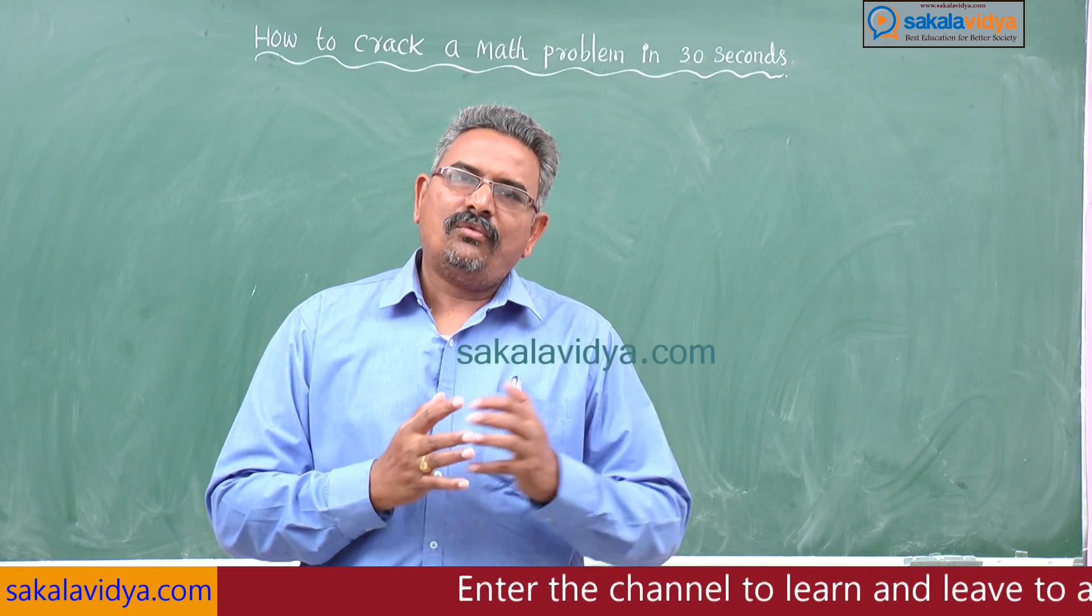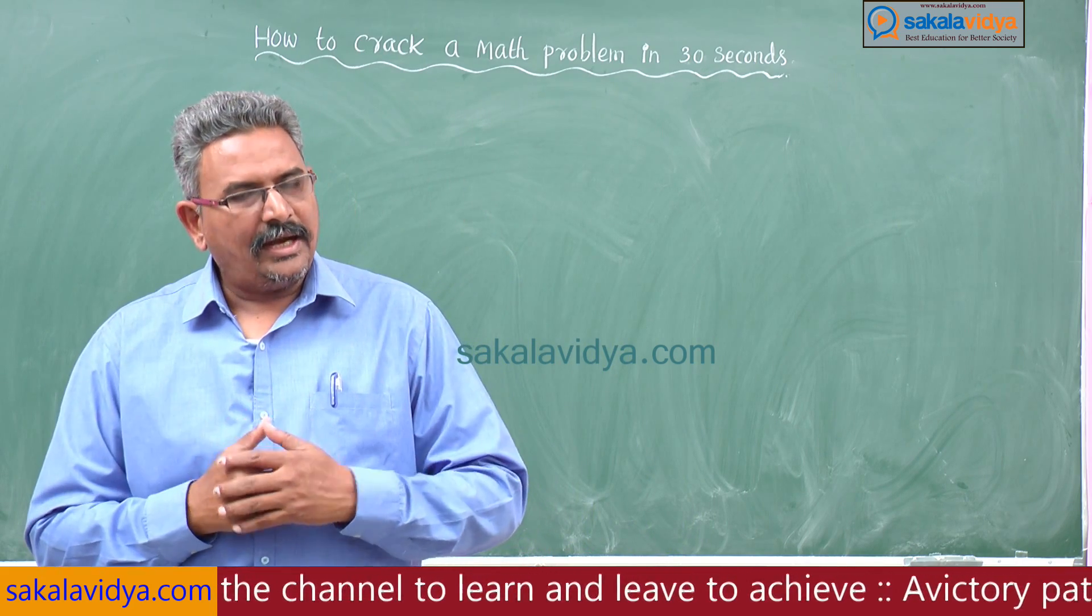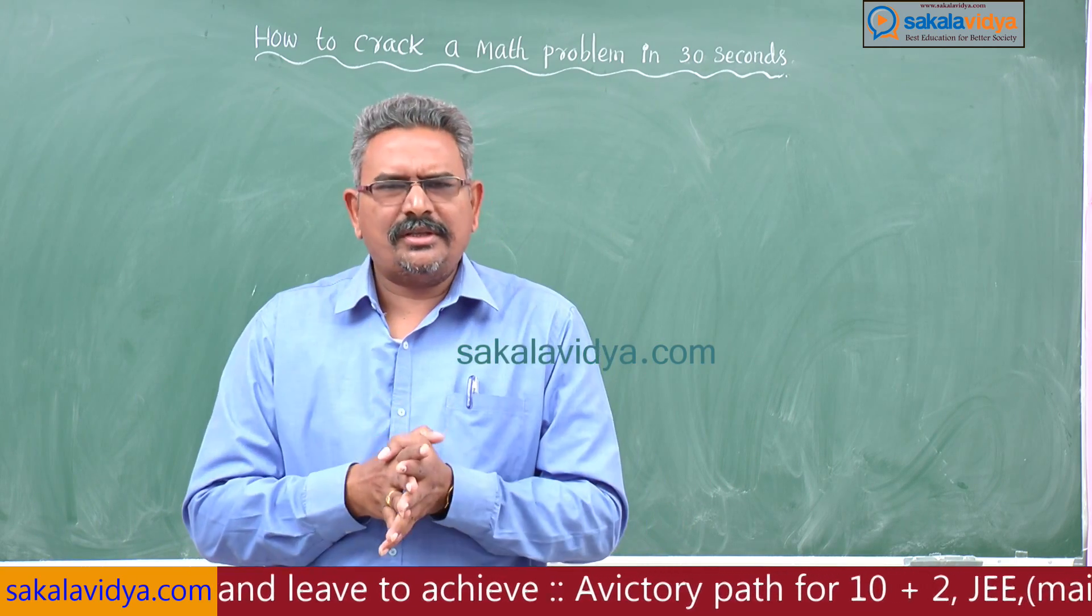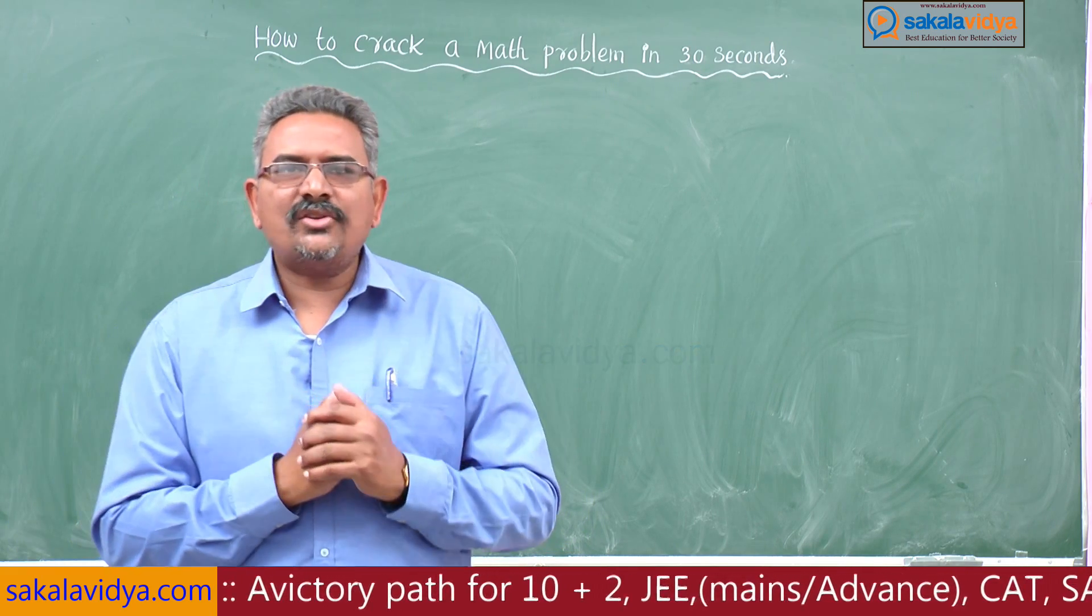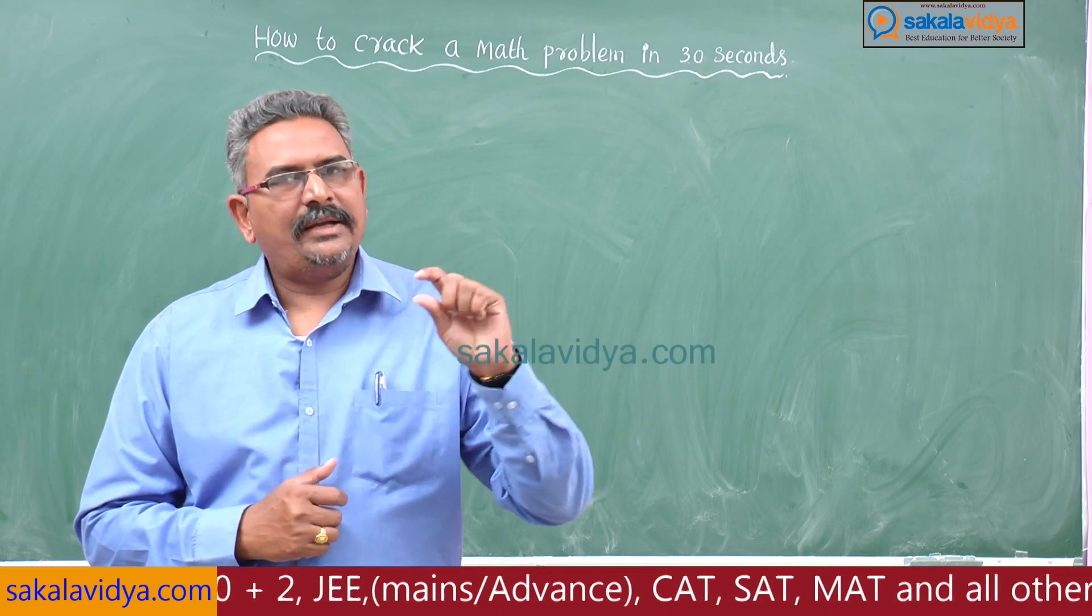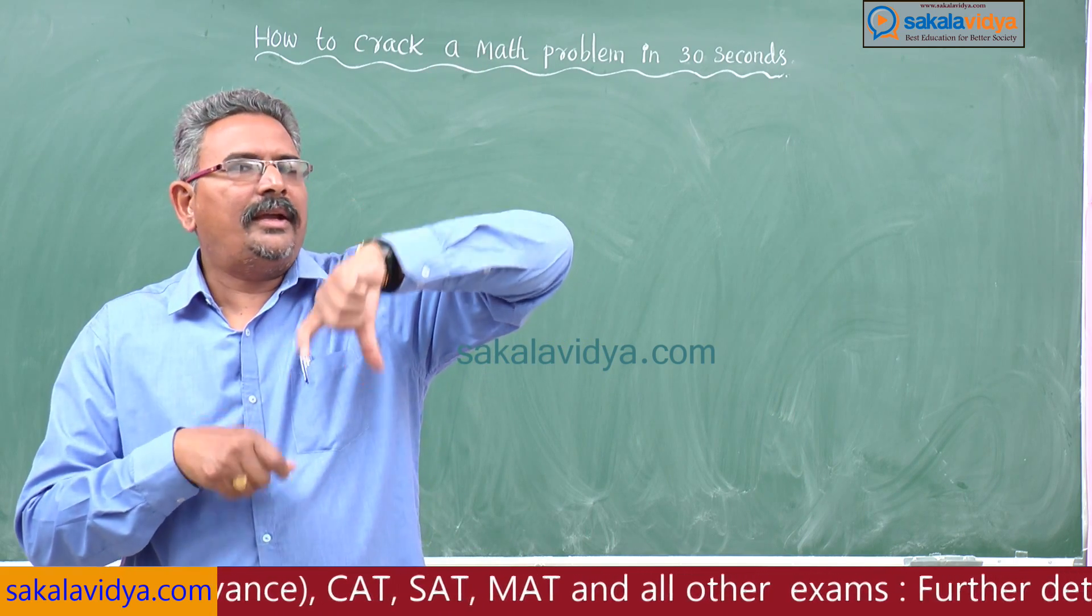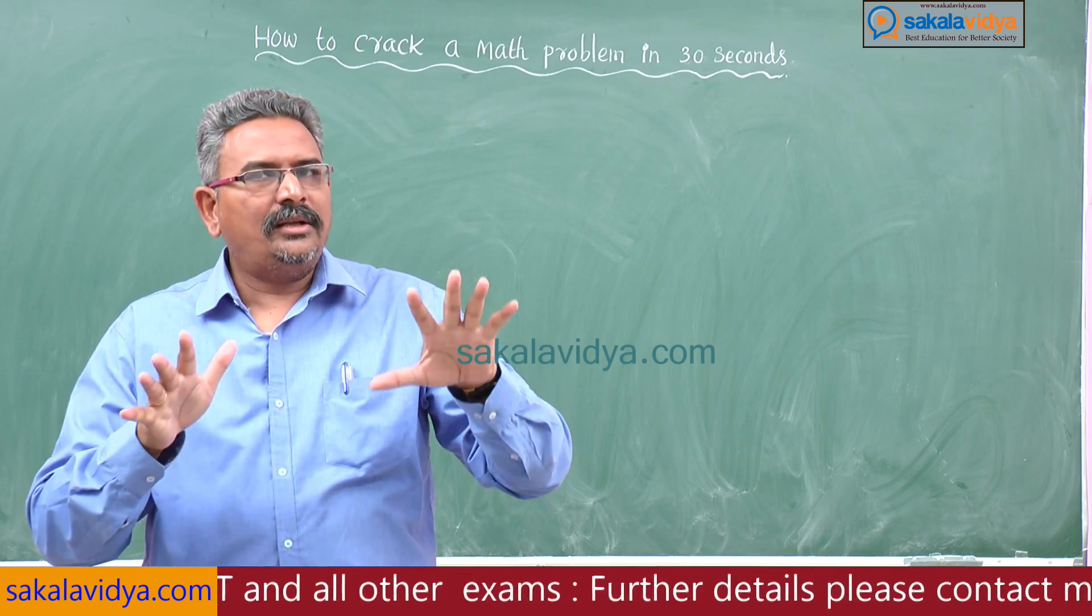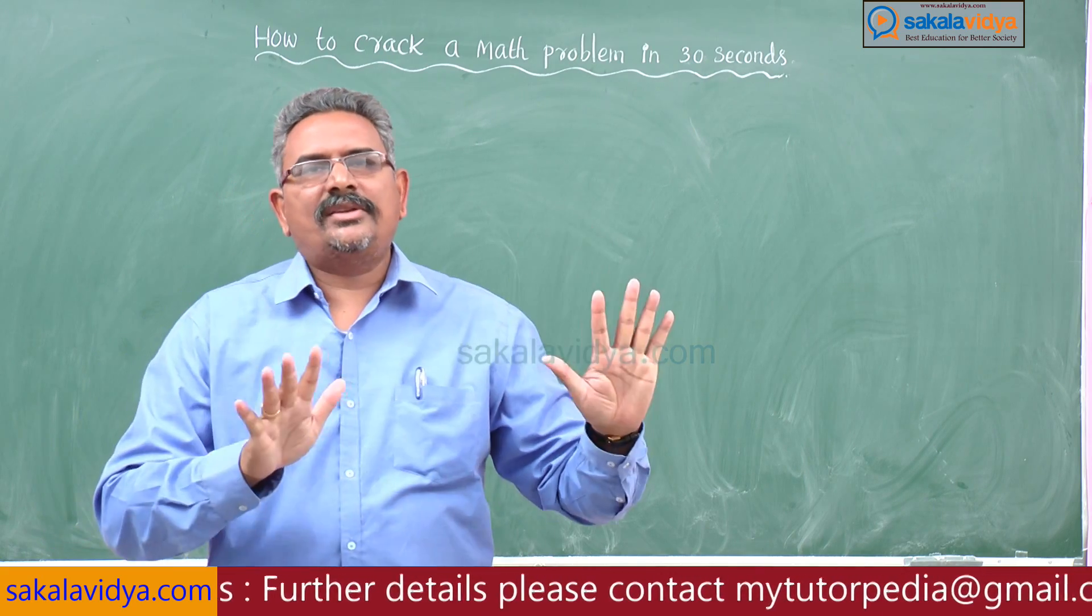What we have to do next step, we have to find out adjoint of A. The adjoint of A can be evaluated using all the cofactors of the element. You might have practiced while writing your board examinations. After getting adjoint A, we have one formula: A inverse equals 1 by det A into adj A. This process has to be followed, it may take more than 3 minutes or 5 minutes in the examination. But this problem, how to do in 30 seconds in this session we shall discuss.